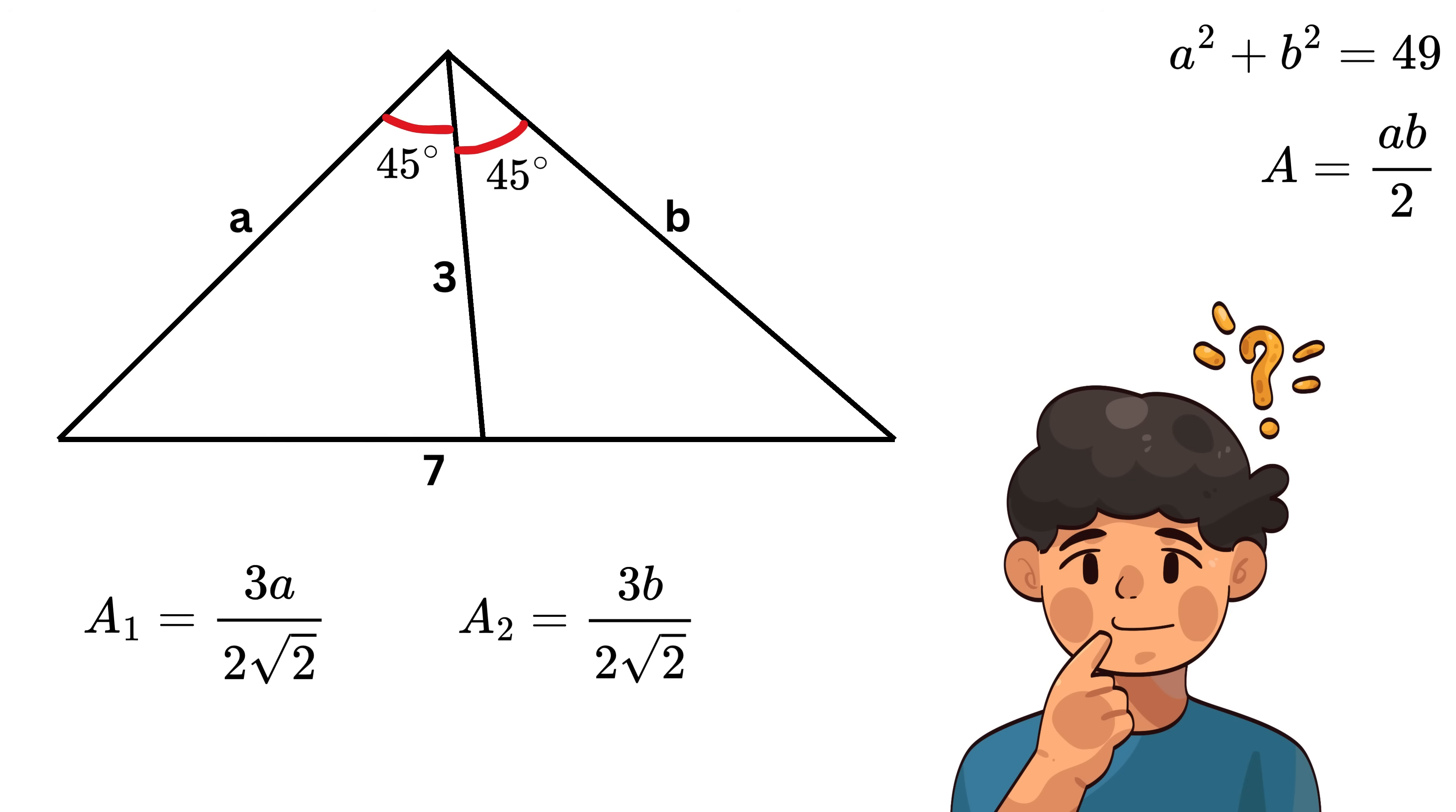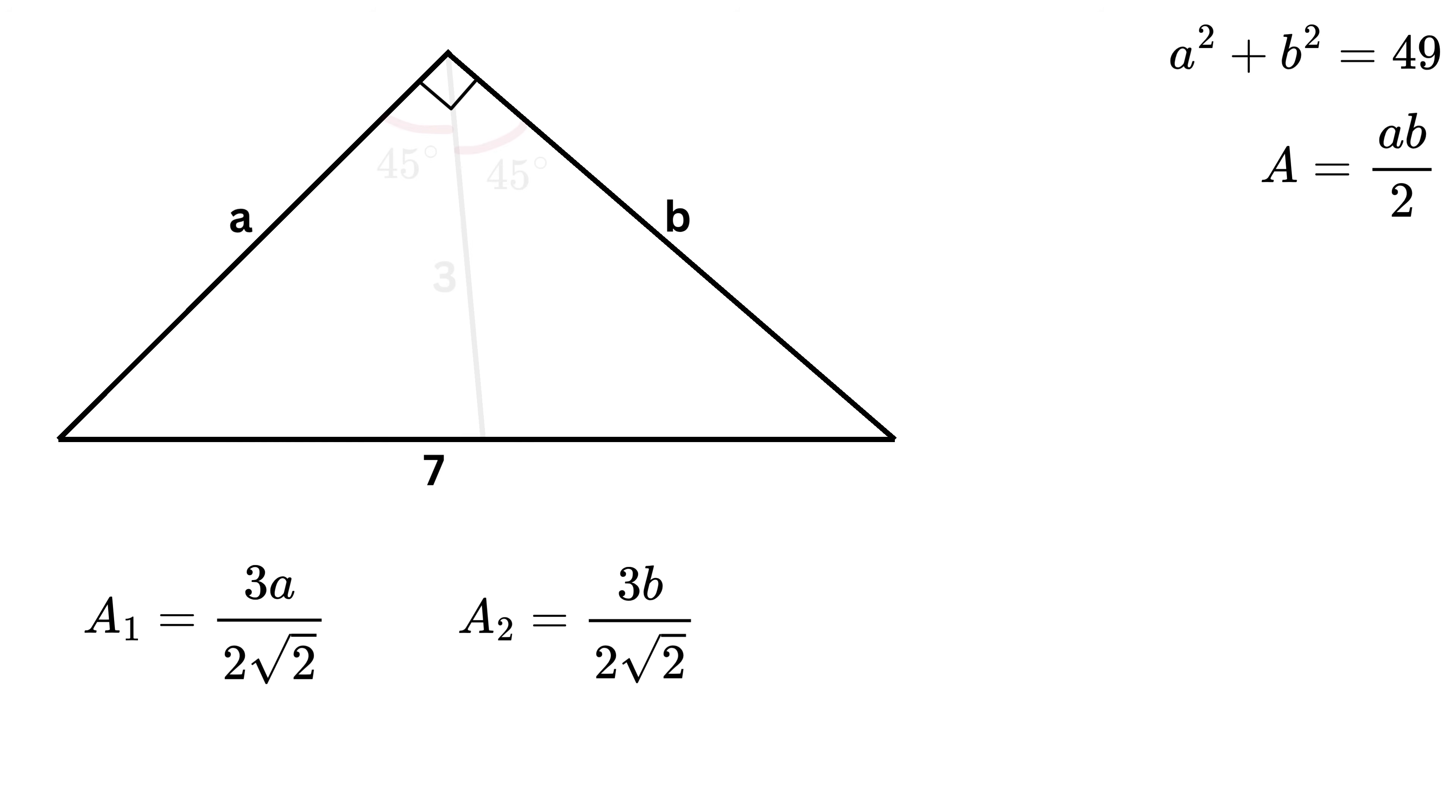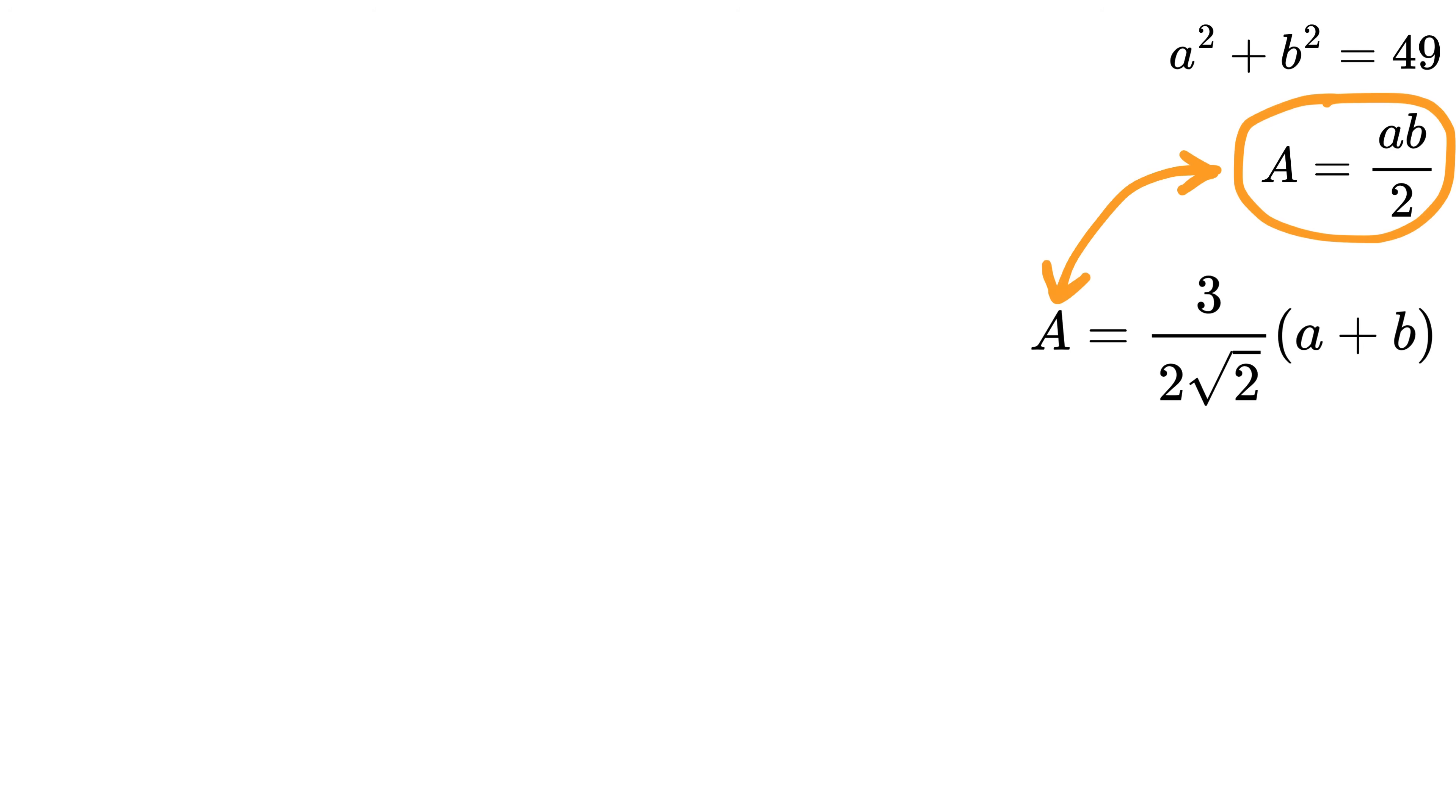Now what do you think should be our next step? Yes, correct. Our main right triangle is simply the sum of these two smaller triangles, and thus its area will be equal to the sum of the areas of these two smaller triangles, which is 3A over 2 root 2 plus 3B over 2 root 2. Take 3 over 2 root 2 as common, and we get this as 3 over 2 root 2 times A plus B. But its area is equal to AB over 2, and thus equate both of them.